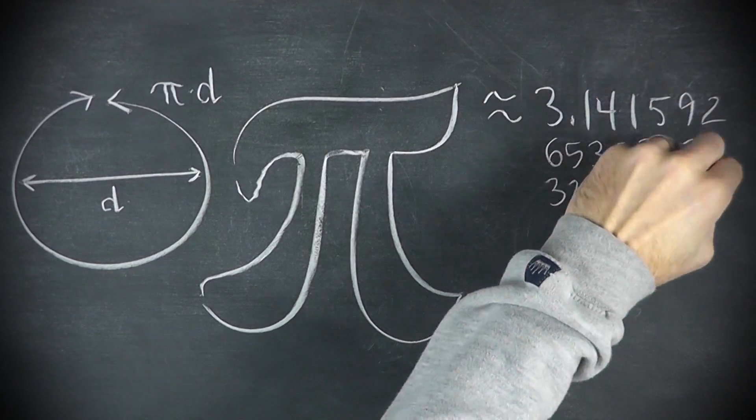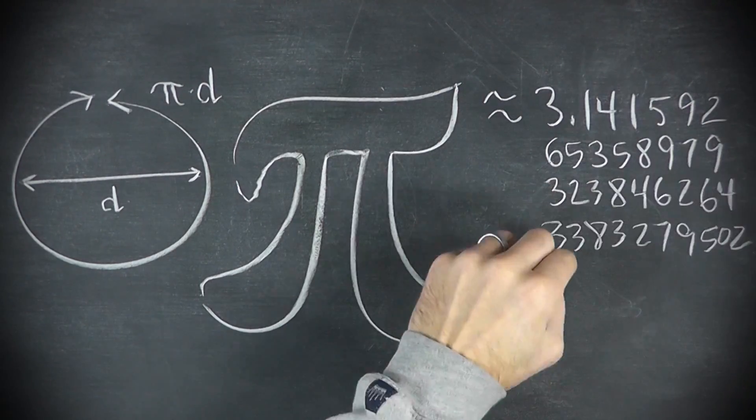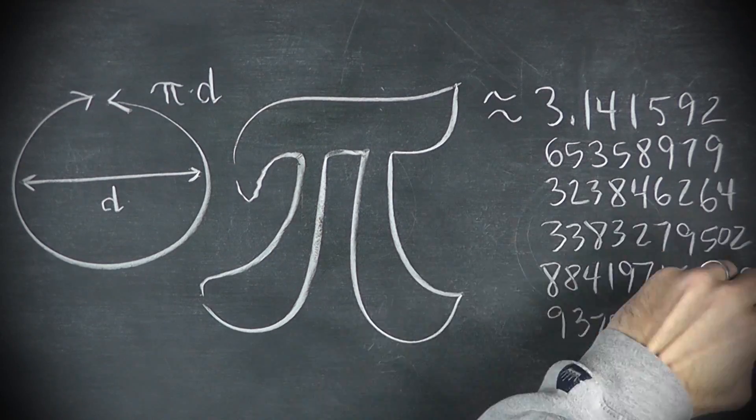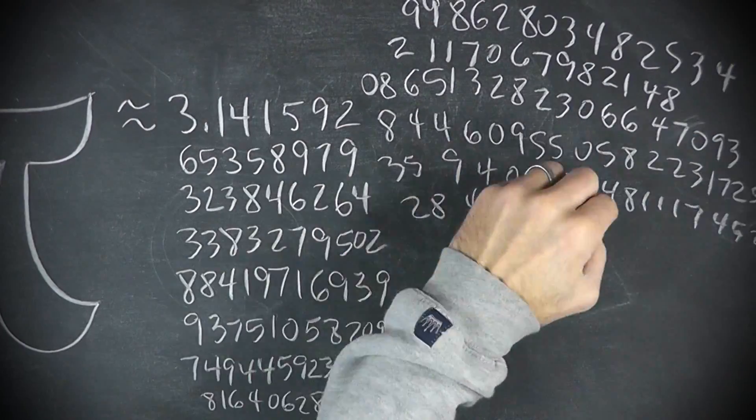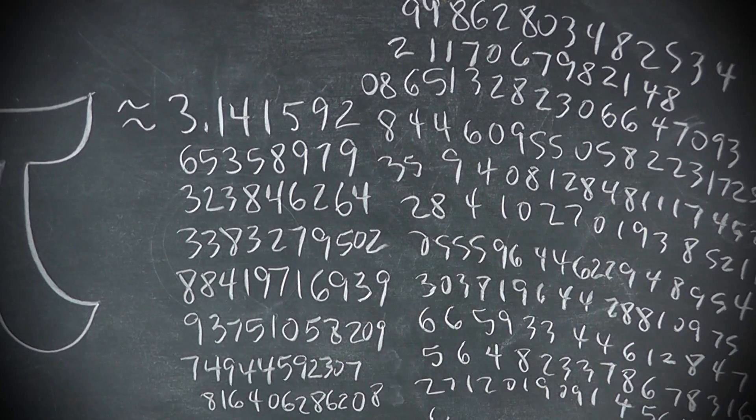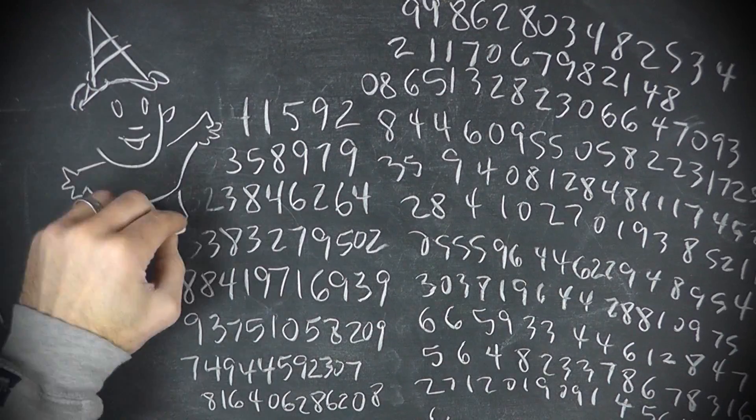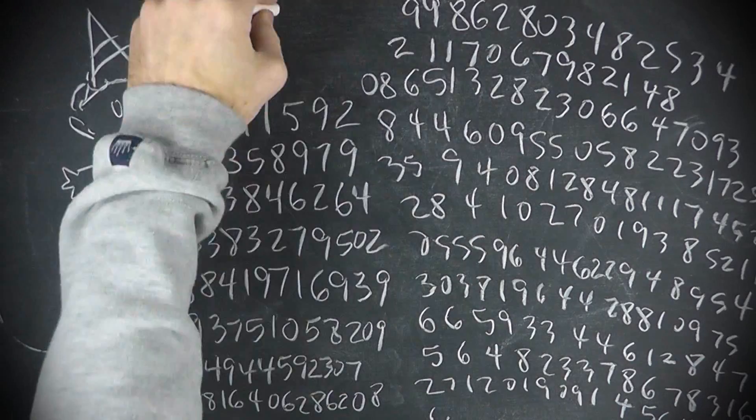You could use 39 decimal places and be accurate enough for all applications. But Pi's digits keep going forever, and they're random. So this means you can find your birthday in Pi. Mine occurs at the 33,870th decimal place.